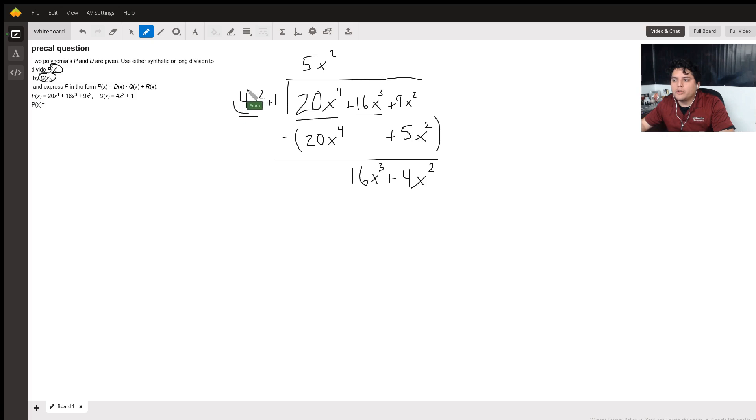What number do you multiply 4x squared with in order to get 16x cubed? You probably realize that 4 times 4 is 16, and x squared times x is going to be x to the third. So when you multiply 4x times this quotient right here, you're going to end up subtracting it from this polynomial over here.